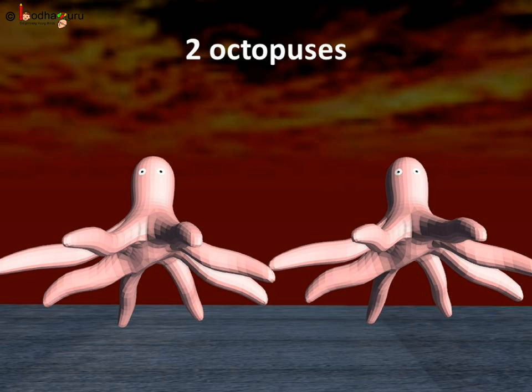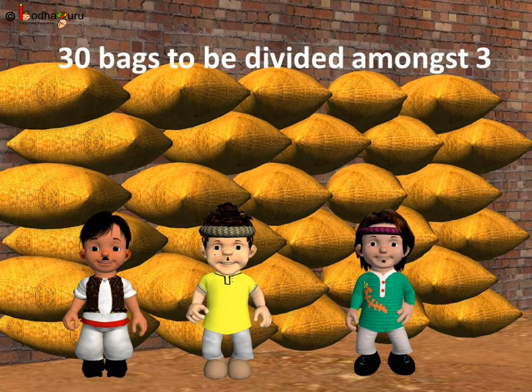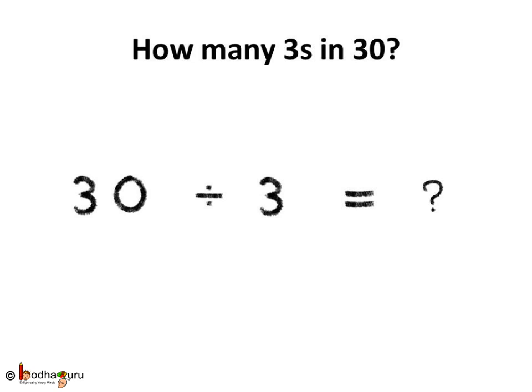In the story, we saw there were 30 bags of grains with the father. He had 3 sons. He wanted to divide the bags equally amongst 3 sons. So, 30 bags needed to be divided amongst the 3 brothers. How many should each brother get? Let us do it ourselves. As there are 3 brothers, we need to find how many groups of 3 can be made by using 30.